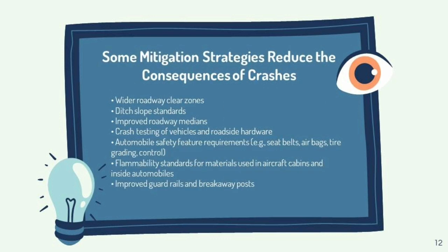Mitigation strategies aim to reduce the consequences of crashes. Examples include: wider roadway clear zones, ditch slope standards, improved roadway medians, crash testing of vehicles and roadside hardware, automobile safety feature requirements such as seat belts, airbags, tire grading and control, flammability standards for materials used in aircraft cabins and inside automobiles, and improved guardrails and breakaway posts.